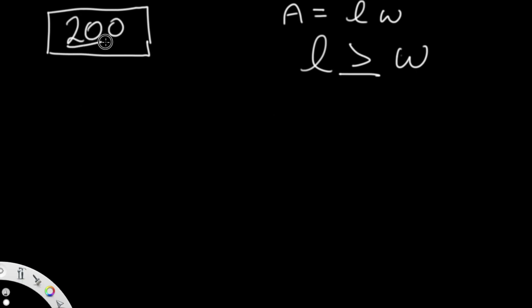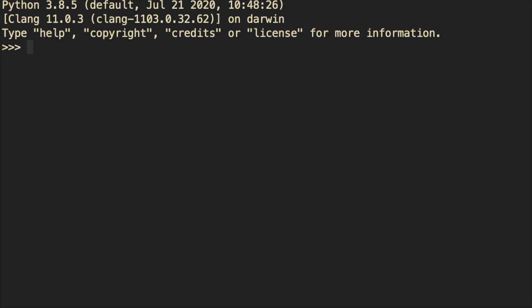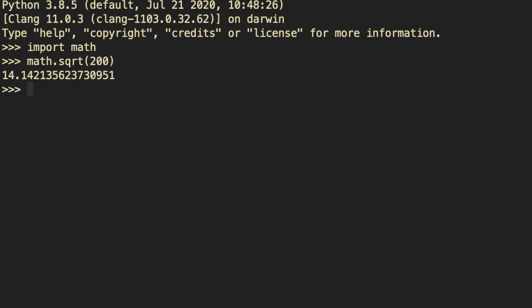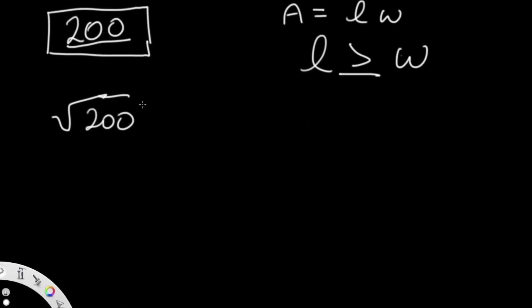Let's take area = 200. I'll open Python and import math to use the square root function. The square root of 200 is 14.14. So if the square root gives an integer, we've found a perfect case where length equals width and we return it. But this is not the case here, so we convert to int and get 14 as our starting value.